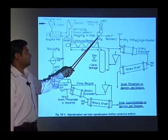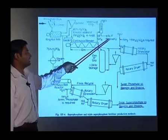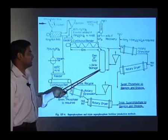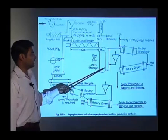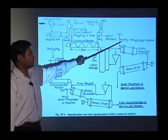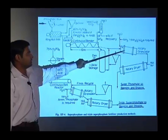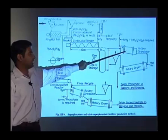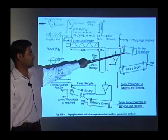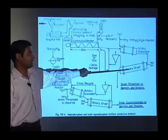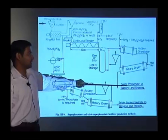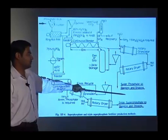Whatever hydrofluoric acid is produced, it is scrubbed for fluoride recovery or sent to waste gas. The product is sent to the rotary granulator where ammonia is added. The nitric content and phosphate content are maintained. Then we are drying in a rotary dryer by passing hot air at high temperature, and we get the superphosphate for bagging and shipping.